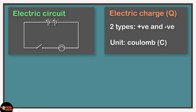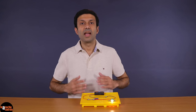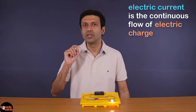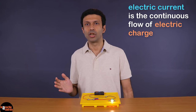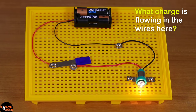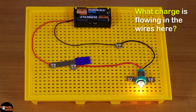Let's put electric charge on our concept board. The symbol Q is used for charge and the SI unit is Coulomb, denoted by capital C. As we discussed, electric current is the continuous flow of electric charge. Now, what charge is flowing in the wires here — protons, electrons, or both?